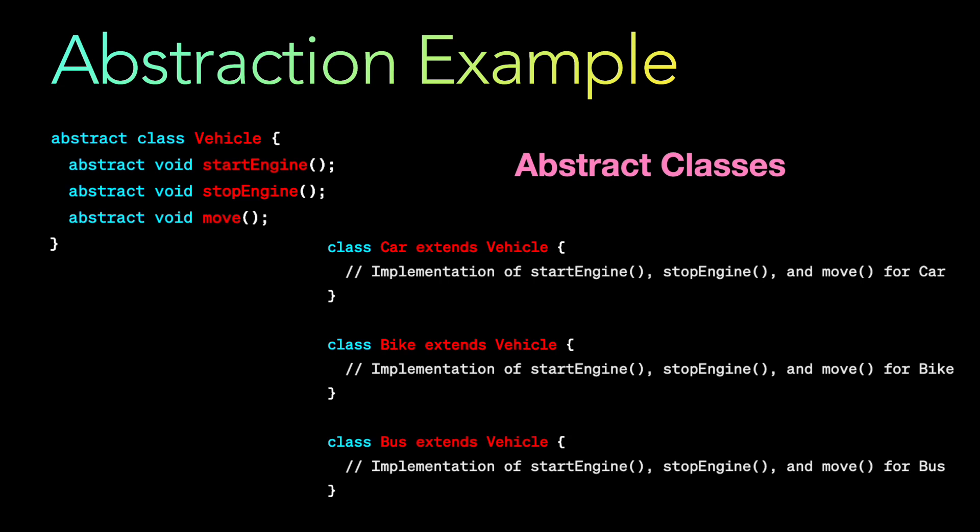The same applies for the Bike class and the Bus class. All three types of vehicles will have different ways of starting an engine, stopping an engine, and different ways in which they move. The implementation will differ, but tomorrow it could be a plane or any other vehicle. You have created an abstract class which can be extended by any concrete class — this is one way of creating and using abstraction.